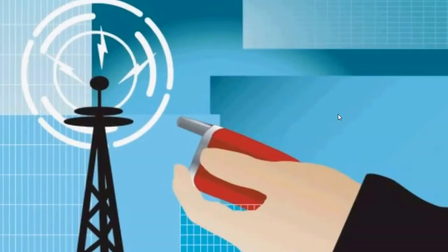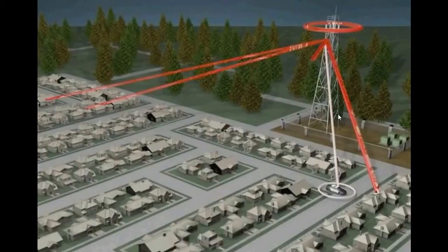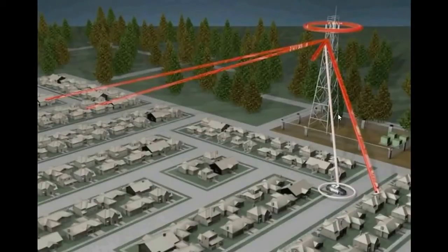The police department has tracking software which is provided by the Department of Telecommunication. By the help of this software they trace the mobile phone. First of all, when the software is switched on, it is connected via WAN, not the internet.